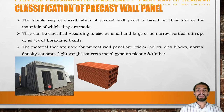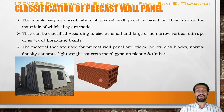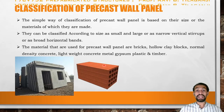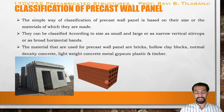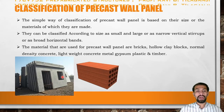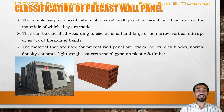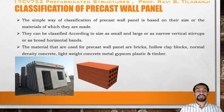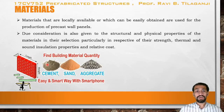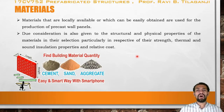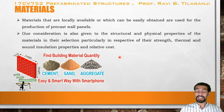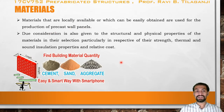In the figure we can see one type of large panel, and another figure shows a hollow clay brick which is also used as a precast element. These materials are prefabricated. We can see that openings for doors and windows are provided, and grooves are provided for resting the joint between the wall panel and the slab panel. These materials are locally available or easily obtained and used for the production of precast walls.